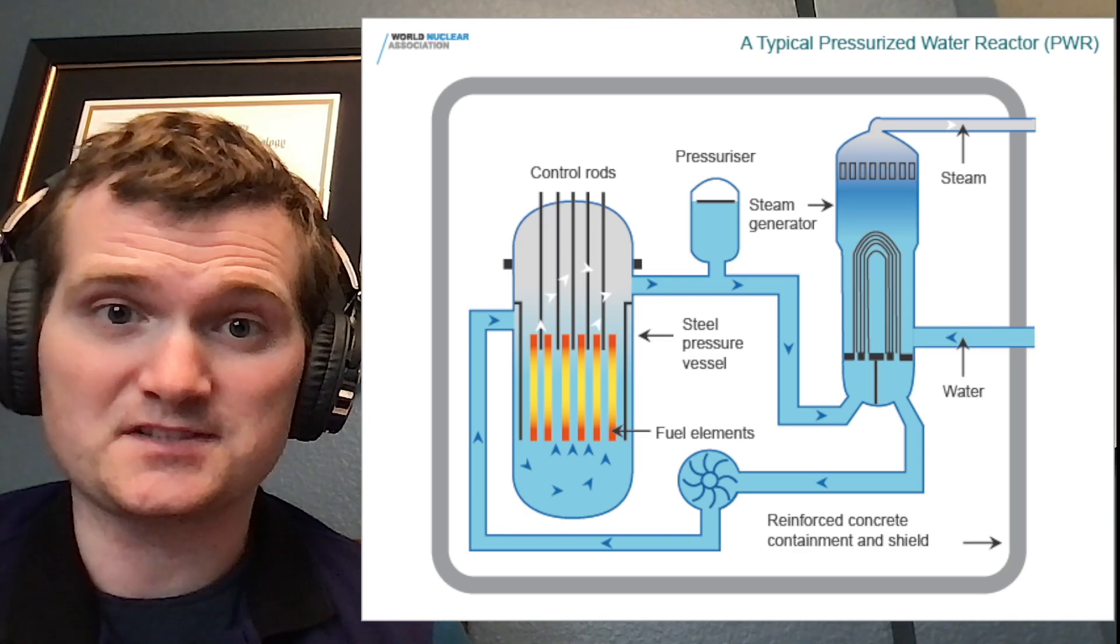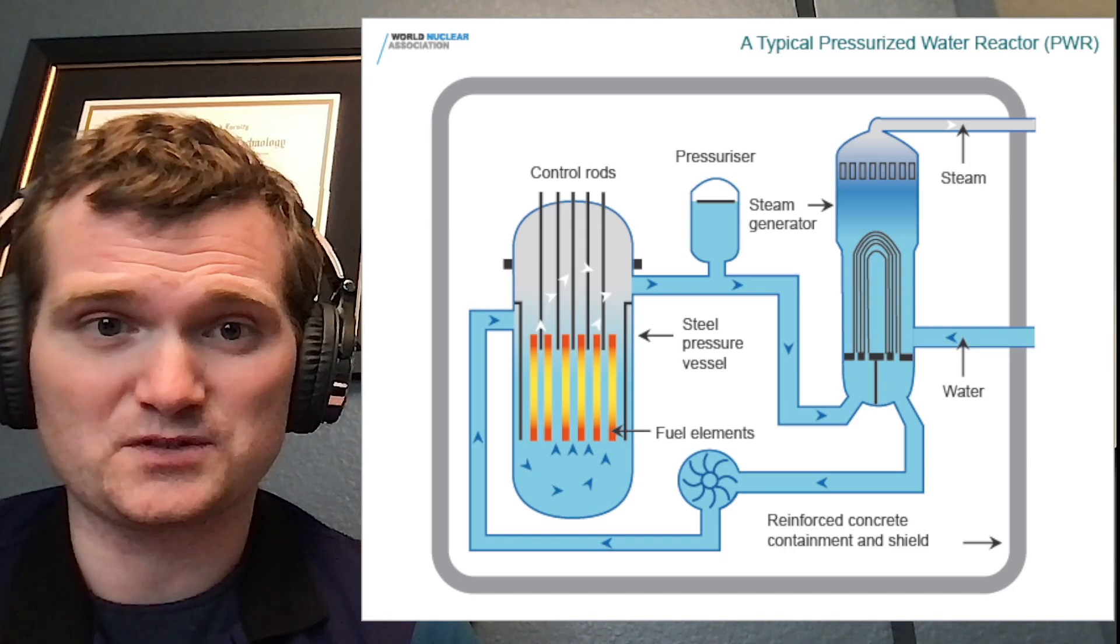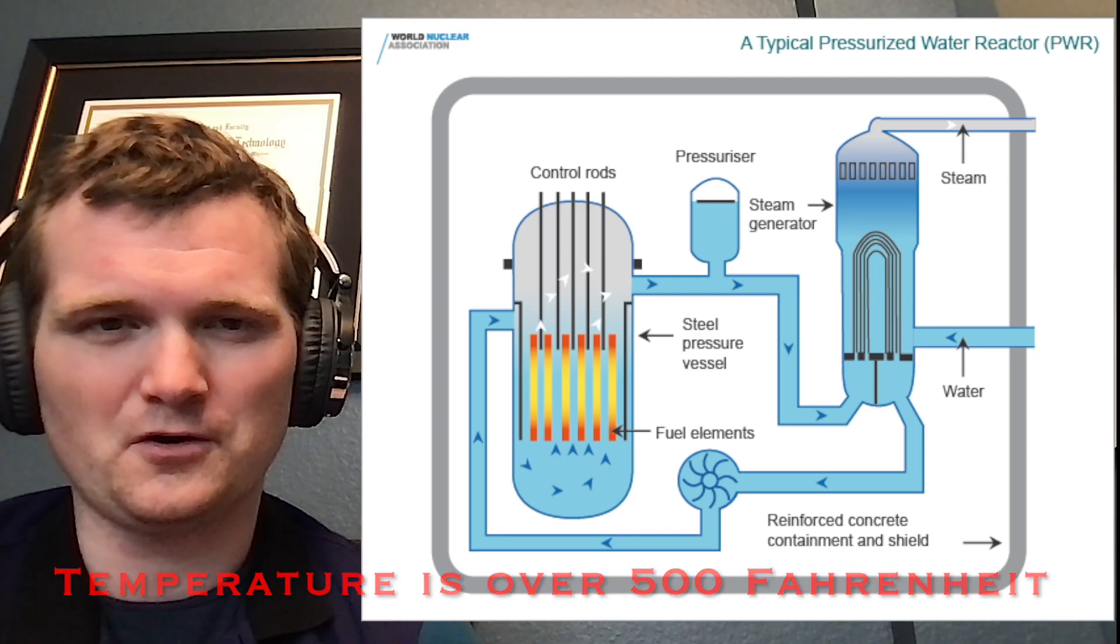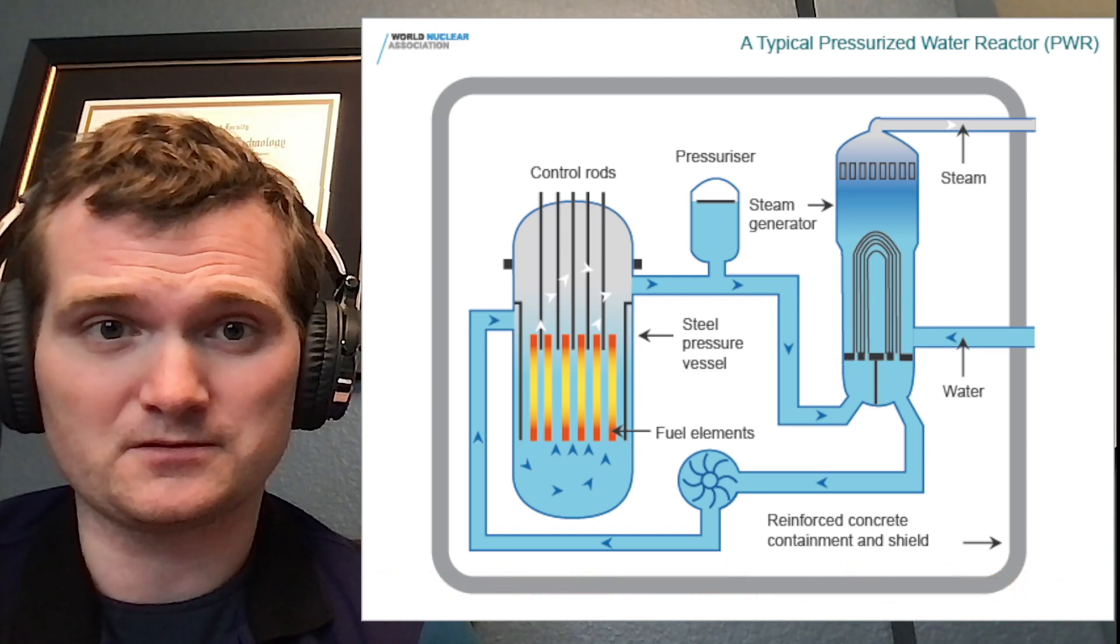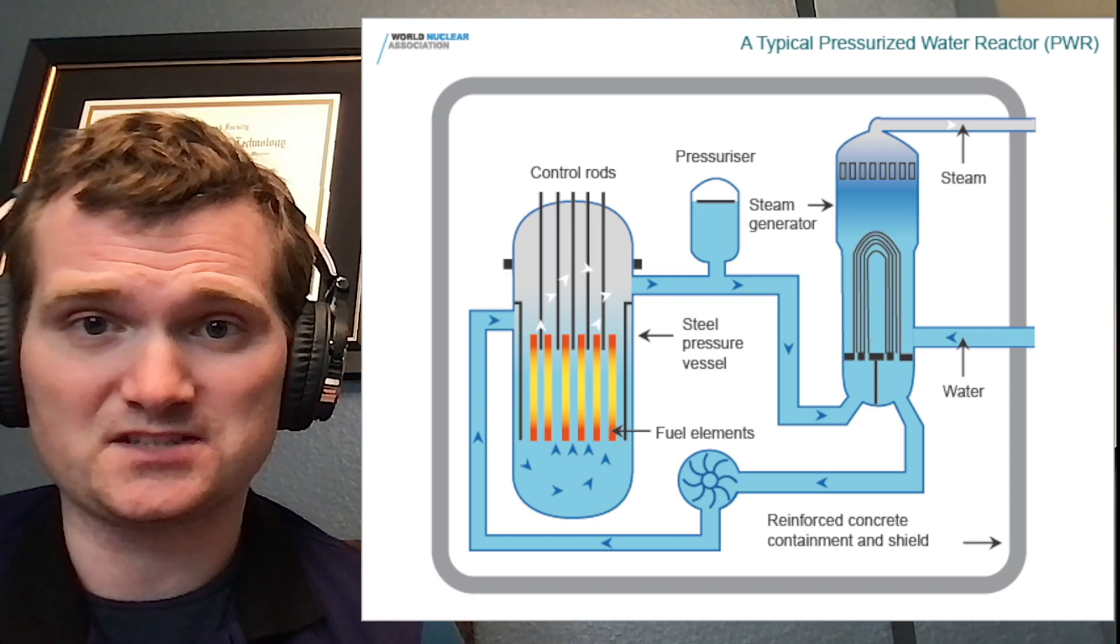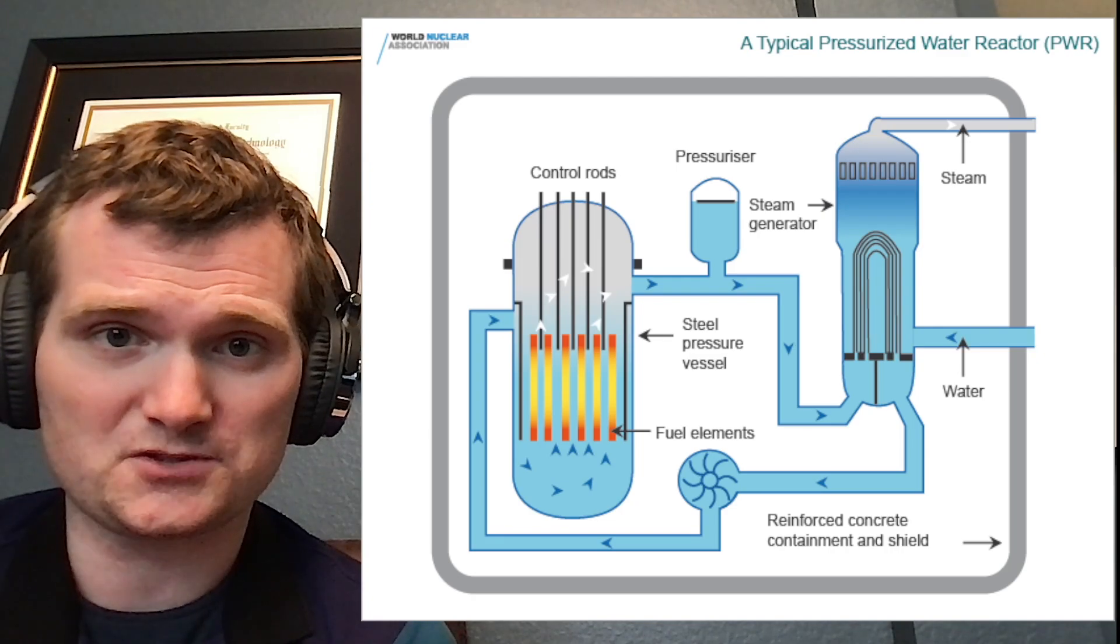It stays pressurized, so it stays in a liquid state the entire time, despite being at extreme temperatures and extreme pressures. Give you a sense of pressure over 2200 psi. The water coolant just goes straight to the steam generator. The steam generator makes steam, turns a turbine, produces electricity.